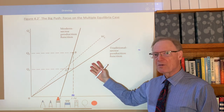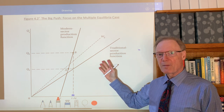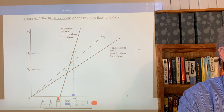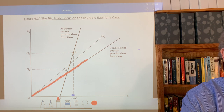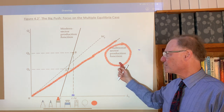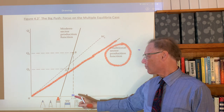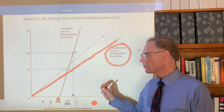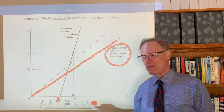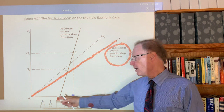In this world, first: constant returns to scale in the activity of producing sandals within the traditional sector. This is represented on the 45-degree line. With a 45-degree line we're assuming that one worker is able to produce one sandal — or whatever unit we define, maybe three pairs of sandals — we call that one unit of sandals per day. So it's one for one.